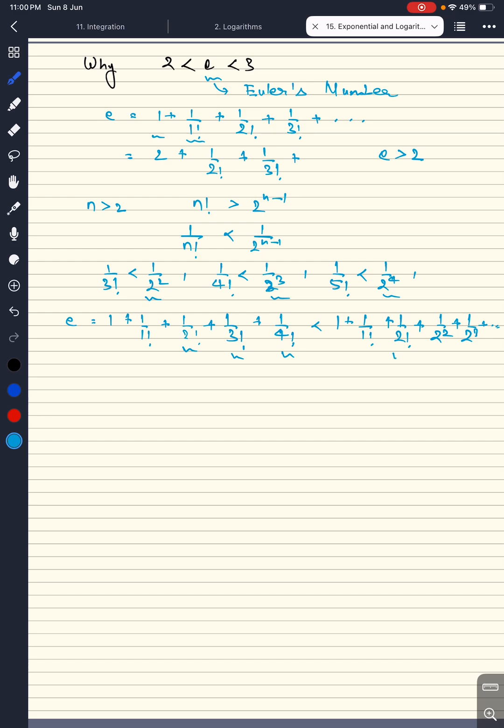Now here we can see it is making a geometric progression with common ratio 1 over 2. So here I can use the formula and write it as 1 over 1 minus 1 by 2.